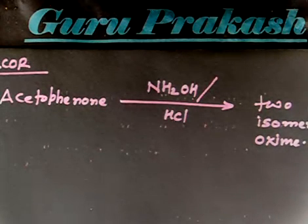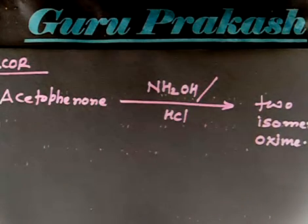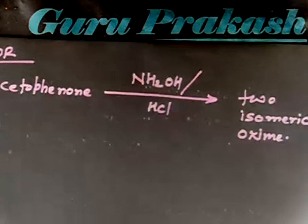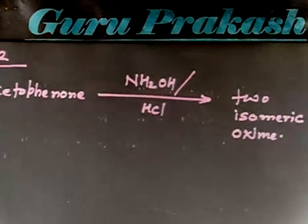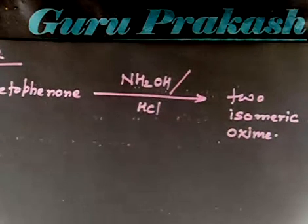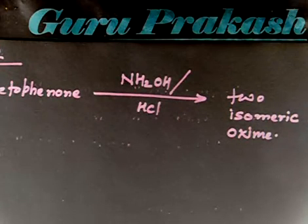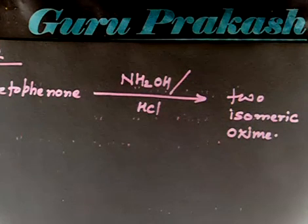If acetophenone reacts with NH2OH in acidic medium, this gives two isomeric oximes. You have to write down the structure of these two isomeric oximes. First, write down the structure of acetophenone.